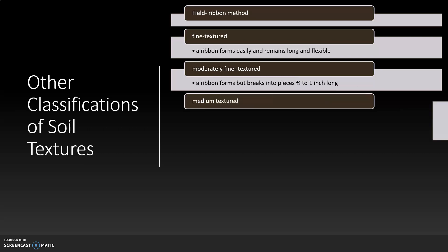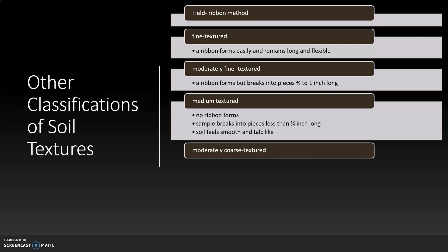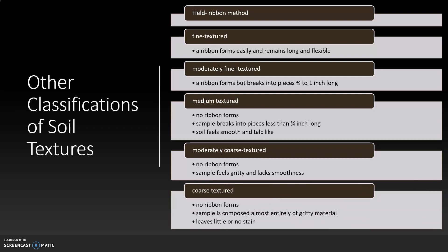Medium textured soils do not form a ribbon and samples break into pieces less than three quarters of an inch long. Soil feels smooth and talc-like. Moderately coarse textured soils do not form ribbons, and the sample feels gritty and lacks smoothness. Coarse textured soils do not form ribbons. The sample is composed almost entirely of gritty material and leaves little to no stain.